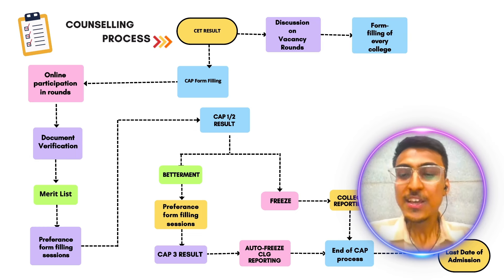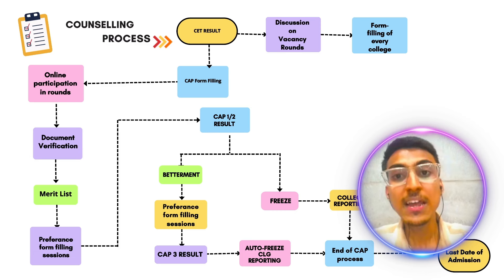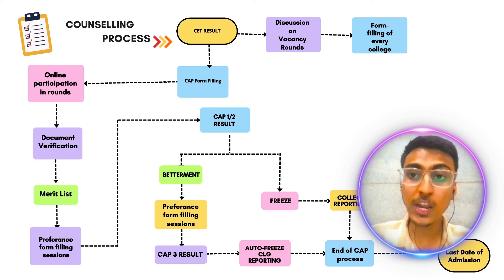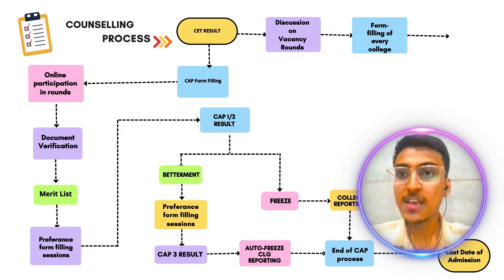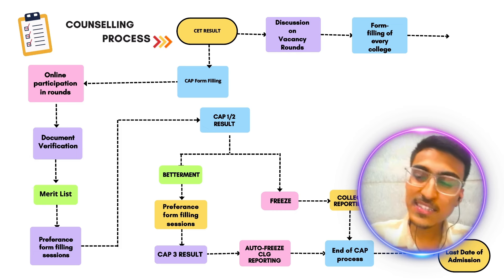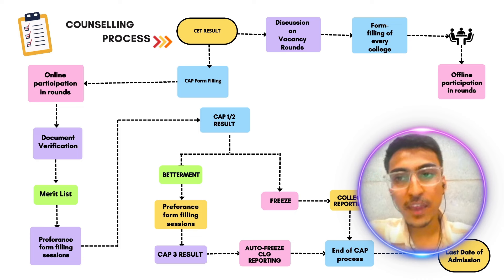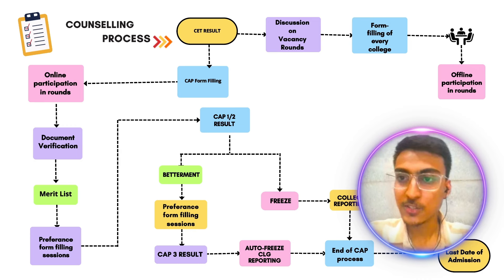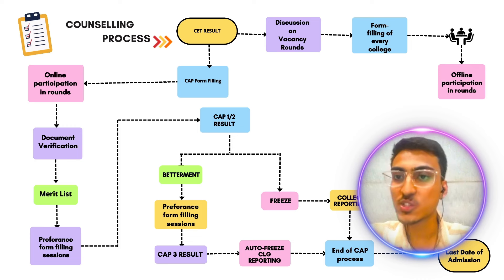Vacancy round का form filling होता है। यह form filling जो होता है, वो हर college का अलग से form भरना होता है — मतलब आप DJ Sangvi में apply करोगे तो DJ Sangvi का 2000 रुपये भरो, SPAT में apply करो तो SPAT का 1500 रुपये भरो, Thadomal Shahani में apply कर रहे हो तो उनका 3000 रुपये भरो form filling का। तो हर एक college का अपना-अपना form रहेगा for vacancy round and management round — दोनों combined rounds होंगे।